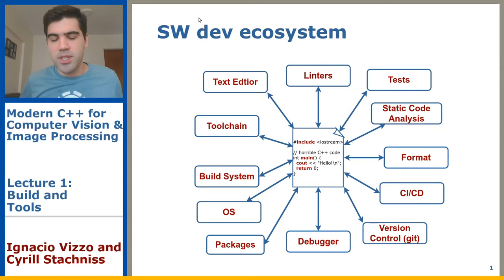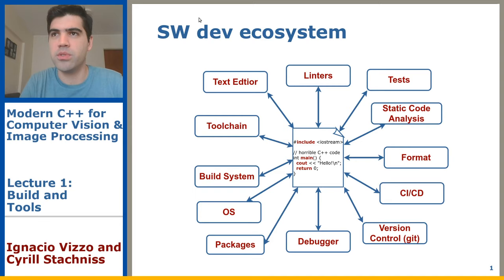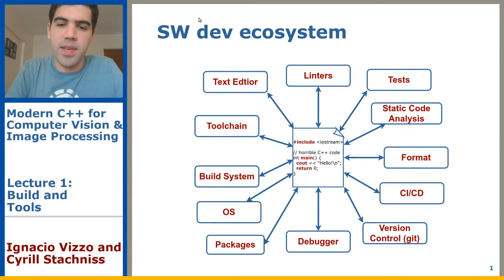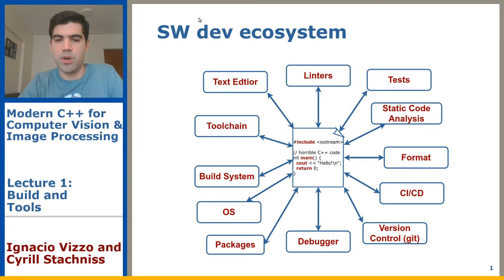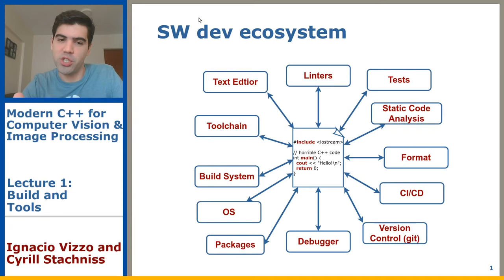This is a really brief overview of how a software development ecosystem looks. In the middle we have the source code. Usually when people think about coding, they only focus on source code. But if you pay attention to the picture, you will see that there are a lot of other tools involved in the development of software. Learning how to use these tools will give you superpowers in terms of how to work with C++ and any other language in general.